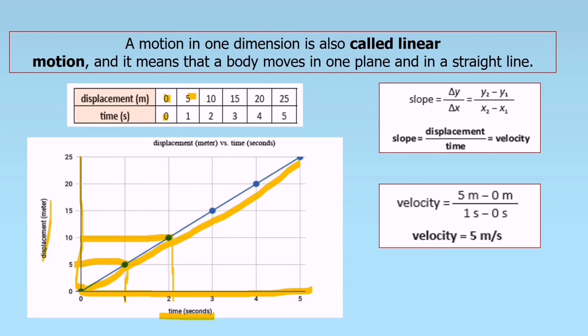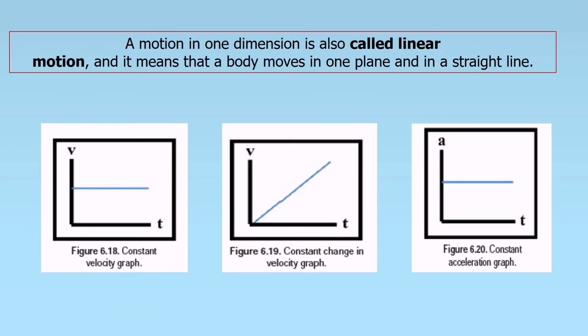If motion is linear, it means constant velocity graph. The velocity is constant. If it's slanted, it means constant change in velocity, meaning the velocity is changing. For acceleration and time, this is velocity. Acceleration: constant acceleration graph.